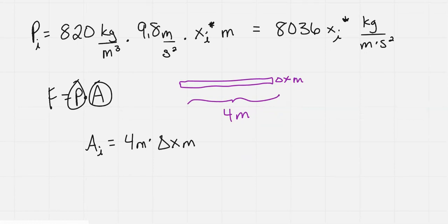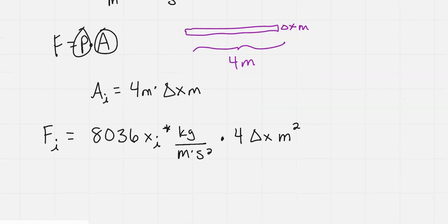So we have this delta x. Now we want to put it all together. Our force at the ith slice is equal to the pressure at the ith slice, which we simplified to 8,036 x sub i star kilograms per meter times second squared. And that's going to multiply the area, which is 4 delta x meters squared. And then we can see, just to double check, always double check your units. One of the meters would divide into each other. So I'd be left with kilogram times meter over second squared, which is our Newton. So this is the Newton measurement, which is what we want for force.